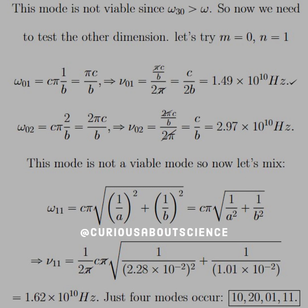Now we need to test the other dimension. Let's try m equals 0 and n equals 1. ω₀₁ gives us πc over b, cancel through, and we get 1.49 times 10¹⁰. That's less than the driving frequency, so we're good.